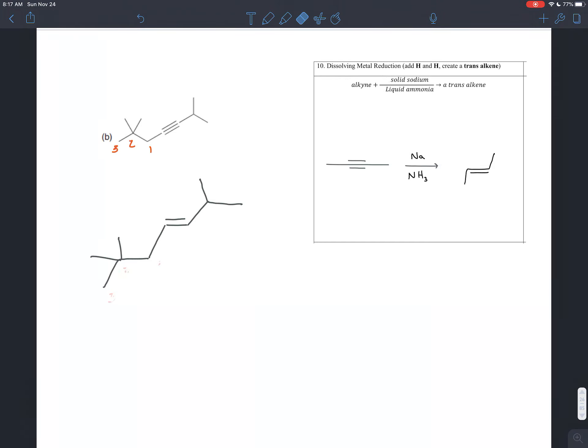And so there you have it. That is your trans alkene. So if you treat this alkyne with sodium in liquid ammonia, it will turn into this trans alkene.